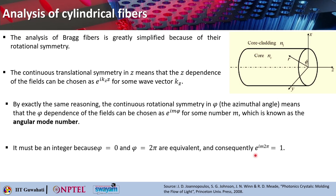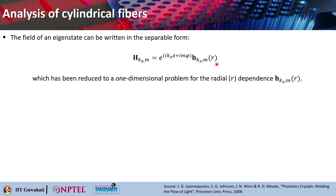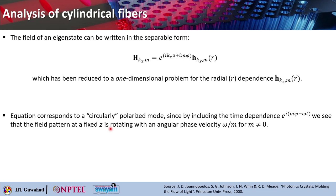Consequently, you should be able to write e^(im·2π) = 1. The field of an eigenstate can be written in the separable form: H_{kz,m} = e^(ikz·z + imφ) times the radial dependency. This has been reduced to a one-dimensional problem for the radial dependence, because here it is a continuous translational symmetry along z and continuous rotational symmetry along phi. The equation basically corresponds to a circularly polarized mode.